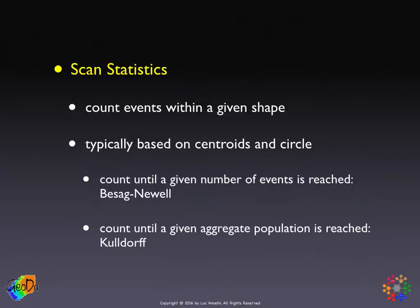The other approach, which is by far the more popular one, is the Kulldorff scan statistic, where you also count but count until a given population is reached. Both of these can be thought of as: you start with a given location, keep moving out, and count what happens in that region — either counting events until you reach your pre-specified critical cutoff, at which point you stop.